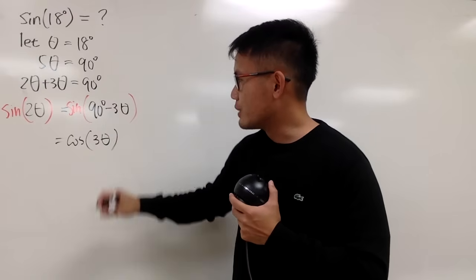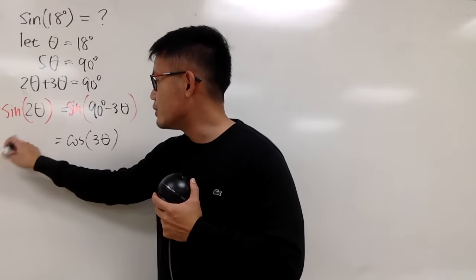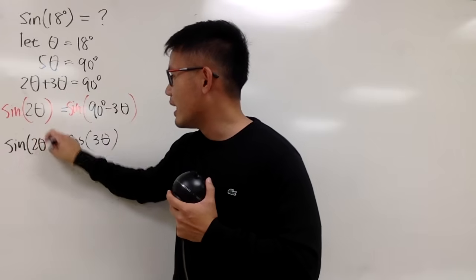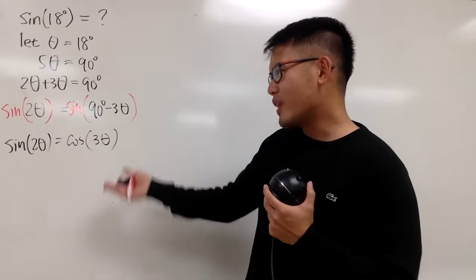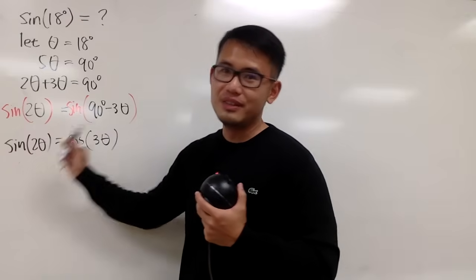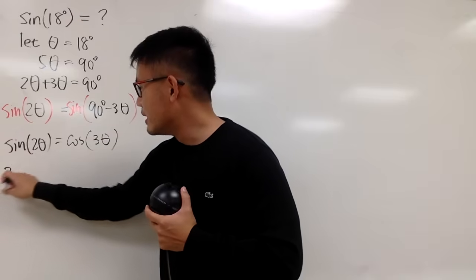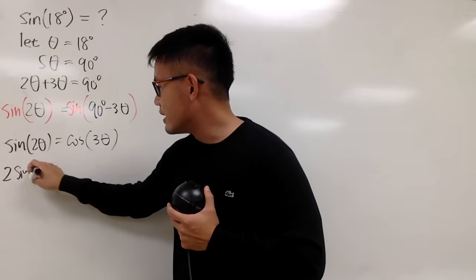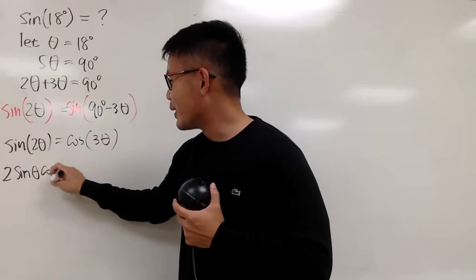So, we have this is equal to that, and on the left-hand side, we still have sine of 2 theta. And this is so wonderful, because on the left-hand side, we have the famous double angle identity for sine. That's equal to 2 sine theta and then cosine theta.